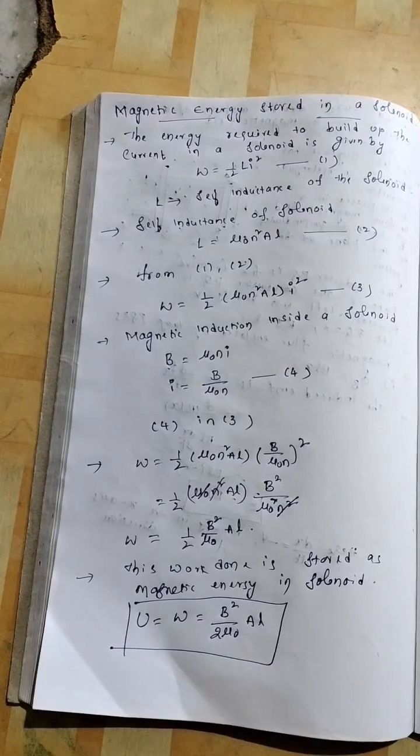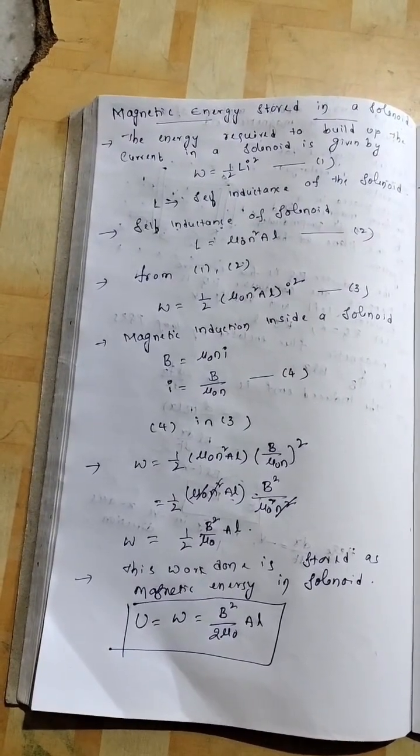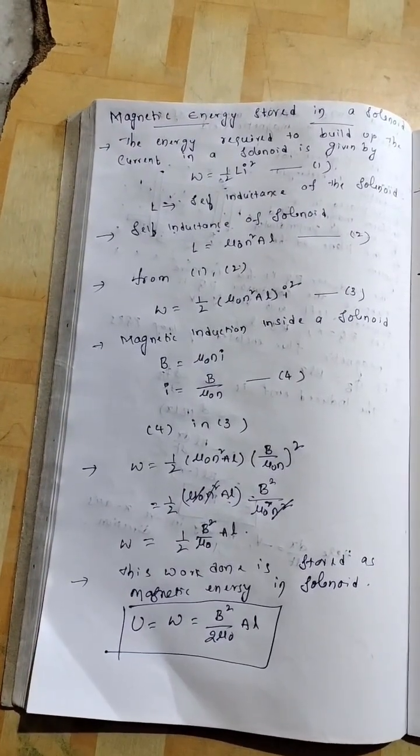So, we will get w equal to half mu0 n square al. In place of i square, we are substituting b by mu0 n. So, square is there, no?